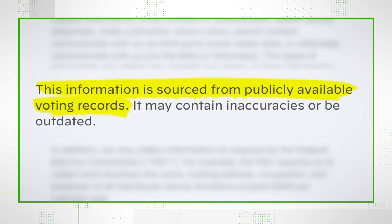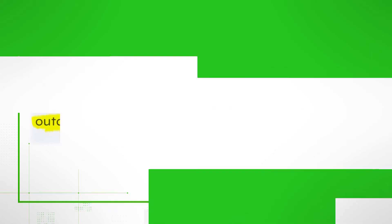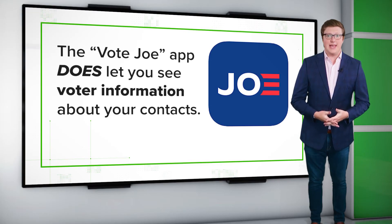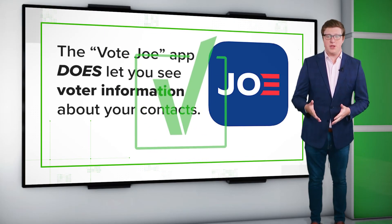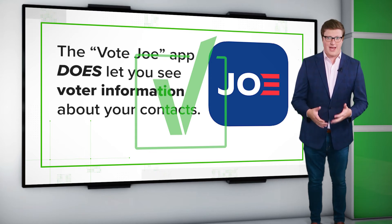When you give the app access to your contacts, it takes the numbers and names in your phone and compares them to a database of public voter information kept by the Biden team. But it's not always accurate. The app has a disclaimer that since it's using public records, it may be inaccurate or outdated. In our test, a few contacts actually showed up as their relatives because they share phone accounts.